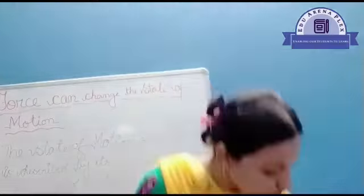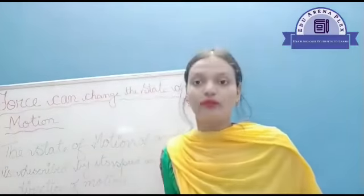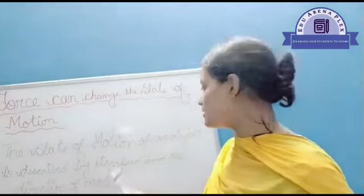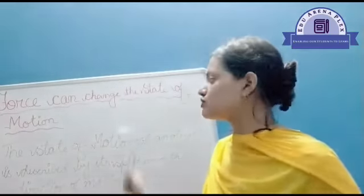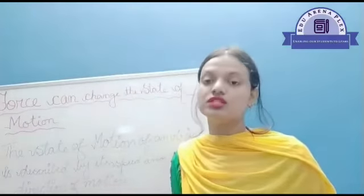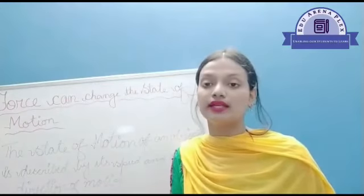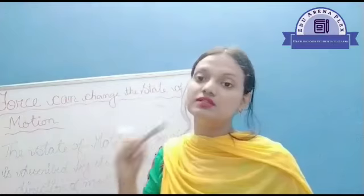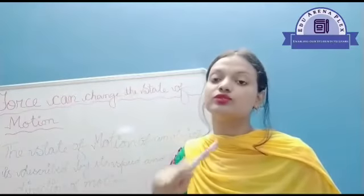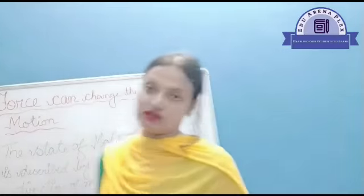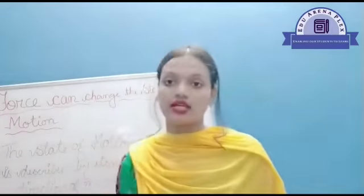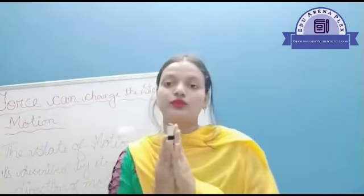So what is the state of motion? The state of motion of an object is described by its speed — how fast it is going — and also by the direction of its motion, whether it is going towards the right, the left, or any direction. So force can change the state of motion. Thank you everyone.